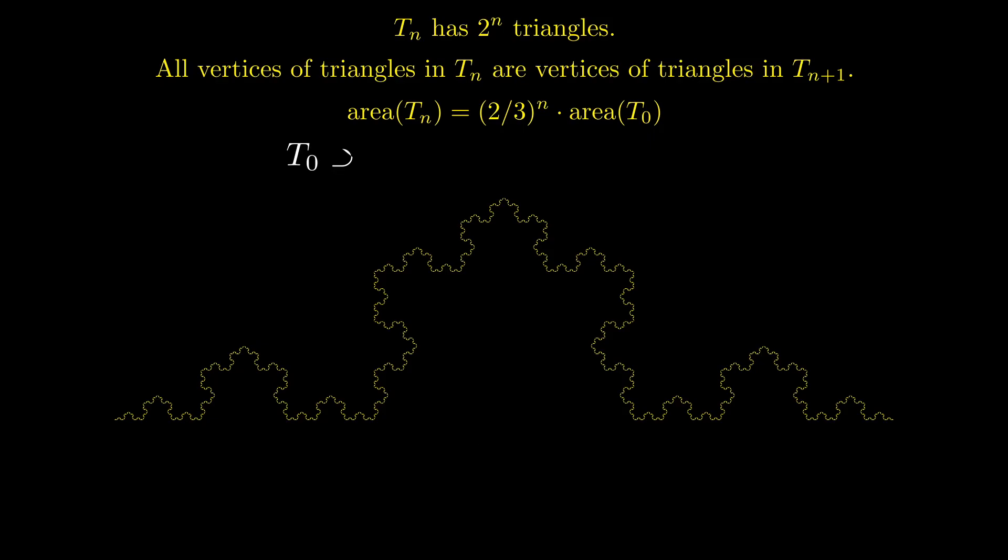This construction generates a decreasing sequence of connected and compact subsets. The actual limit of this sequence is the intersection of all the sets in the sequence, and this connected and compact set is the Koch curve. And because the Koch curve is equal to this intersection, the curve will be contained in every set Tn.